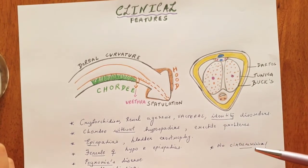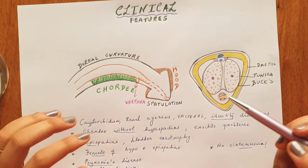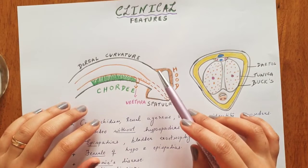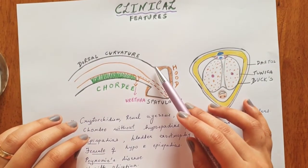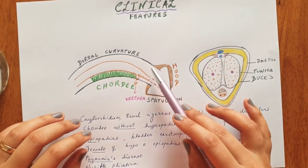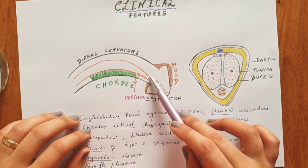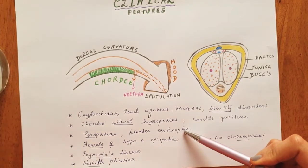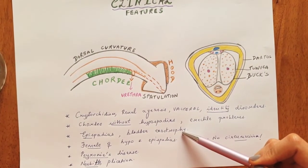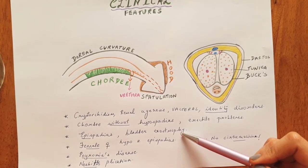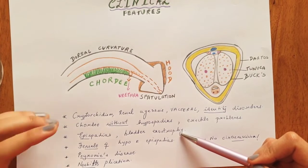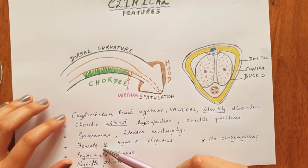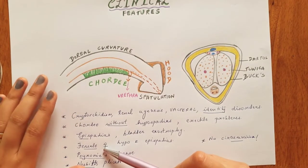There is another condition called epispadias wherein the urethral opening is abnormally found on the dorsal surface of the penile region and is associated with ventral curvature. It is also seen with conditions like bladder exstrophy and diastasis of the pubic bone, and these are also severe and require surgical correction. Epispadias is a condition which can be seen in females as well, and all these are surgically corrected.